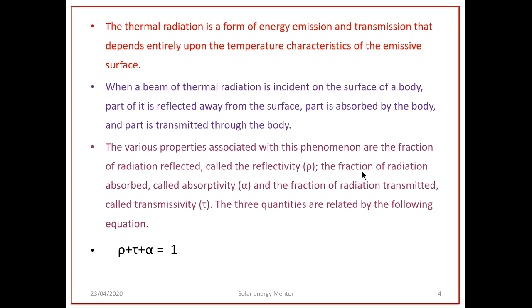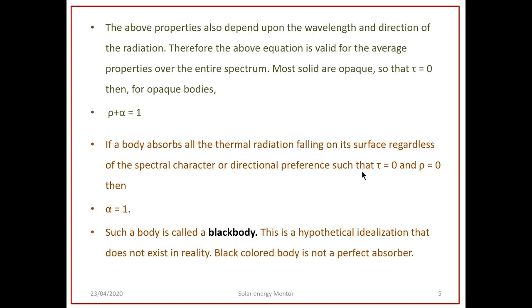The various properties associated with this phenomenon are: the fraction of radiation reflected, called reflectivity (ρ); the fraction absorbed, called absorptivity (α); and the fraction transmitted, called transmissivity (τ). These three quantities are related by the equation ρ + τ + α = 1. These properties also depend on the wavelength and direction of the radiation, so the equation is valid for average properties over the entire spectrum.